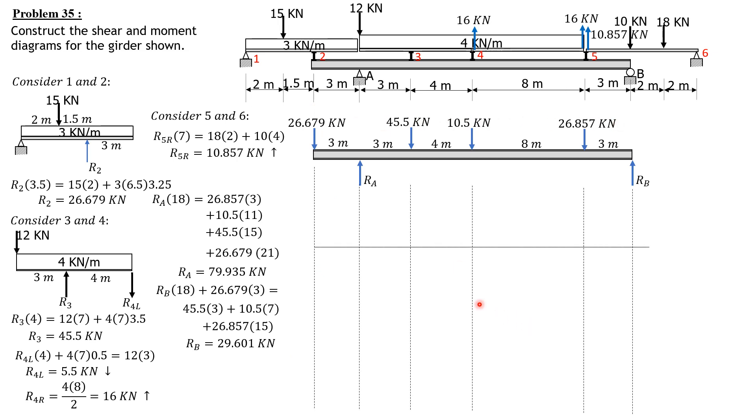For the shear diagram, first we go down negative 26.679 kilonewtons. The ordinate is negative 26.679, then constant. Then plus RA: negative 26.679 plus 79.935 equals 53.256. There's no change in shear here, constant only. 53.256 minus 45.5 equals 7.756.